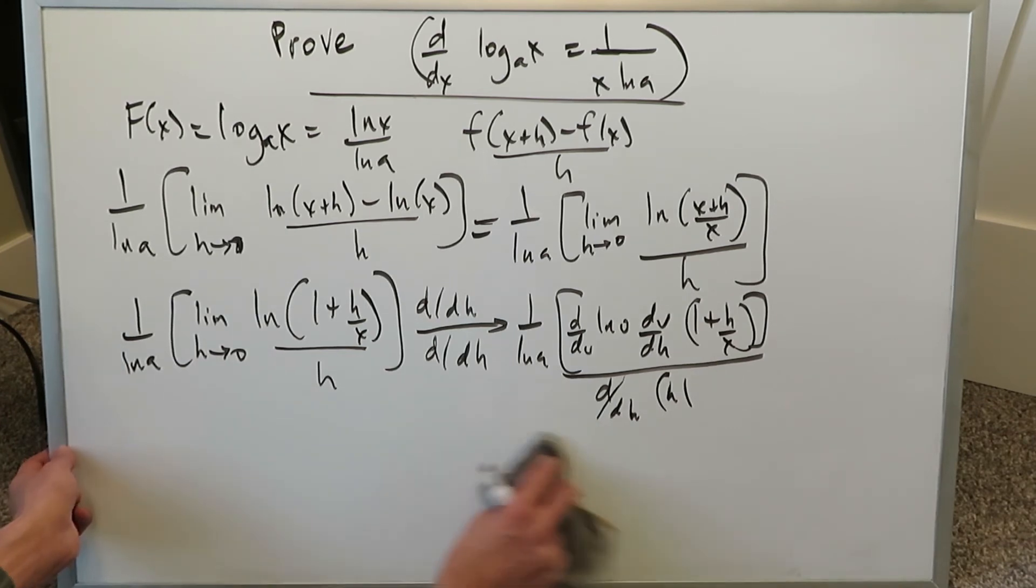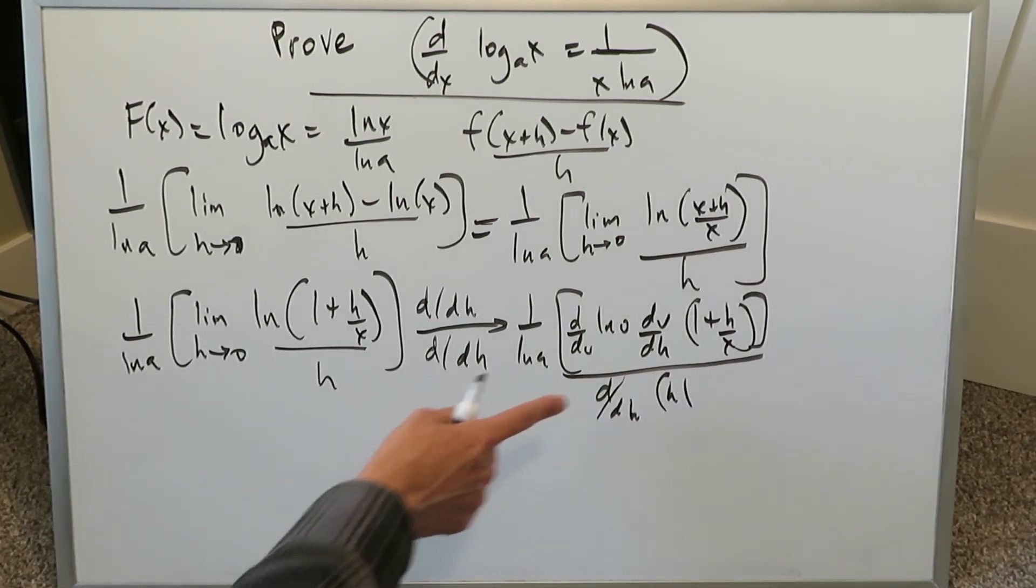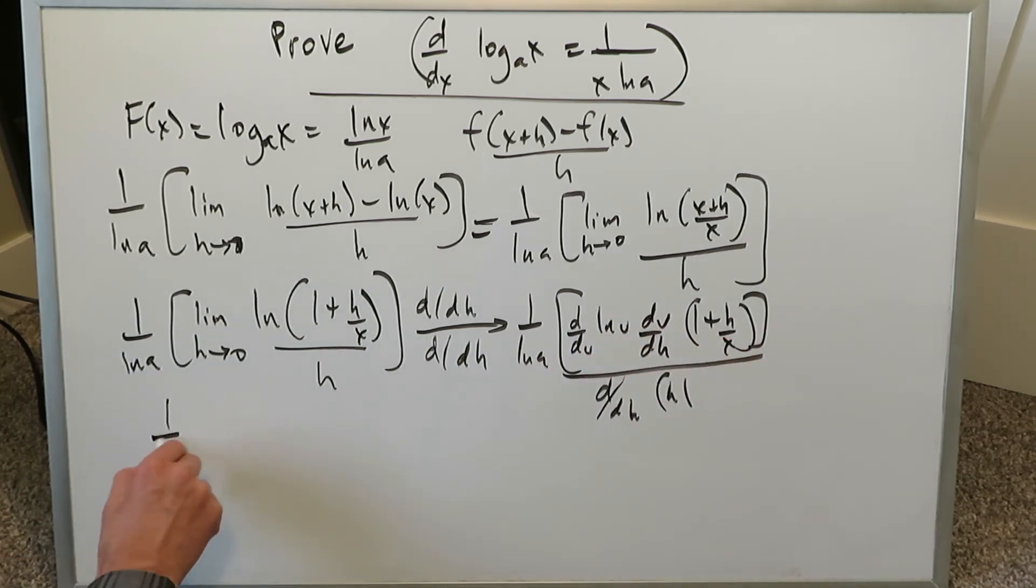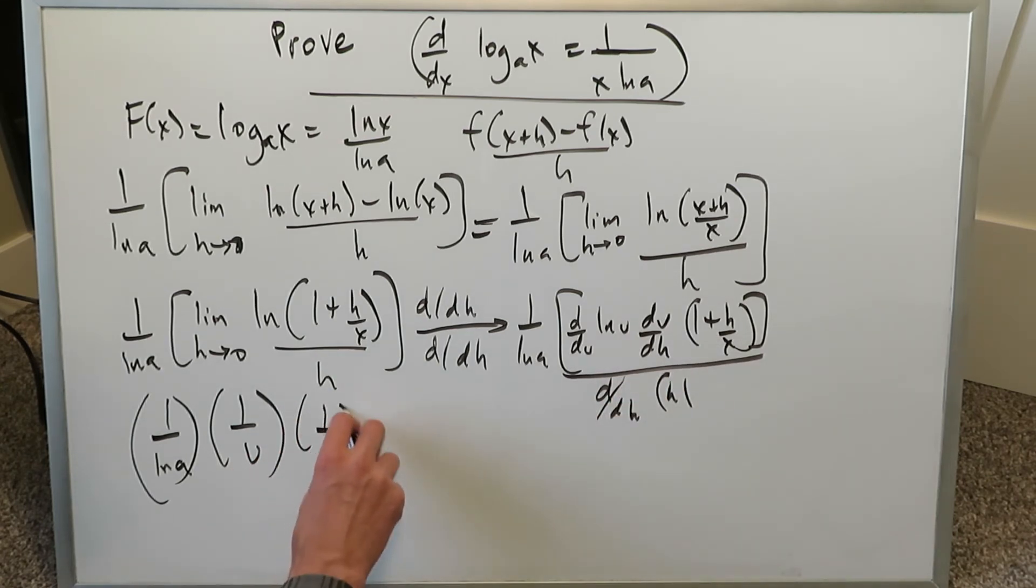Now everything will come very seamlessly into play. If anything seems confusing, you can always rewind and re-watch this part. It's a chain rule over here. We have 1 over ln A sitting outside. Let's keep it sitting outside. Derivative of ln u is 1 over u. Derivative of 1 plus h over x, as I've told you, is just 1 over x. Derivative of h is just a 1.